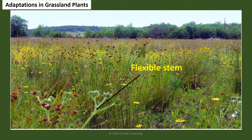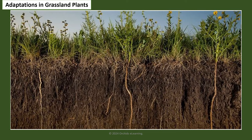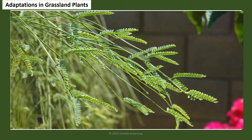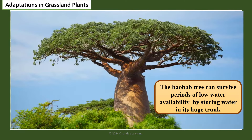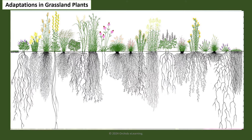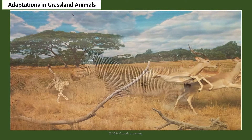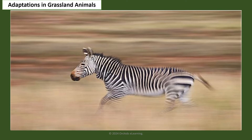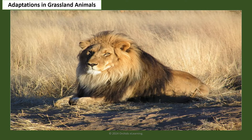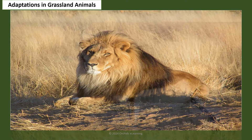Grassland plants usually have flexible stems that bend instead of breaking in strong wind, and strong roots. Plants have narrow or tiny leaves to reduce water loss. The baobab tree stores water in its huge trunk to survive periods of low water availability. Some plants have roots that extend deep into the soil to absorb as much water as possible. Most grassland animals can run fast to escape predators and grassland fires. Many have brown skin shades to camouflage among the dry brown grass.